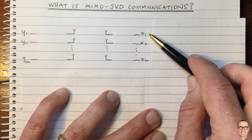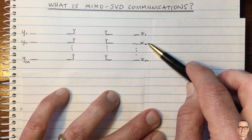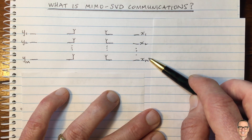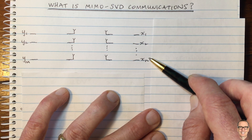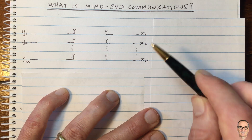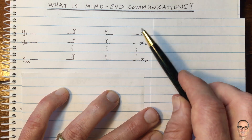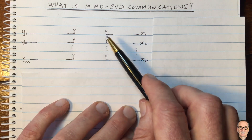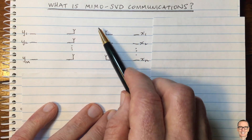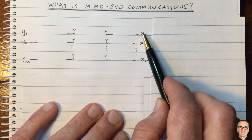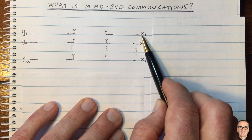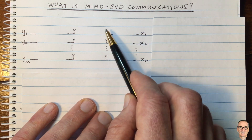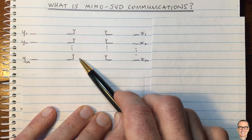For more details about modulation and constellation diagrams, you can check out the description below — there are lots of videos on the channel explaining these concepts. If you did just connect these straight through, then each of these elements is going to radiate that constellation point, that symbol, and it's going to be propagated through the channel.